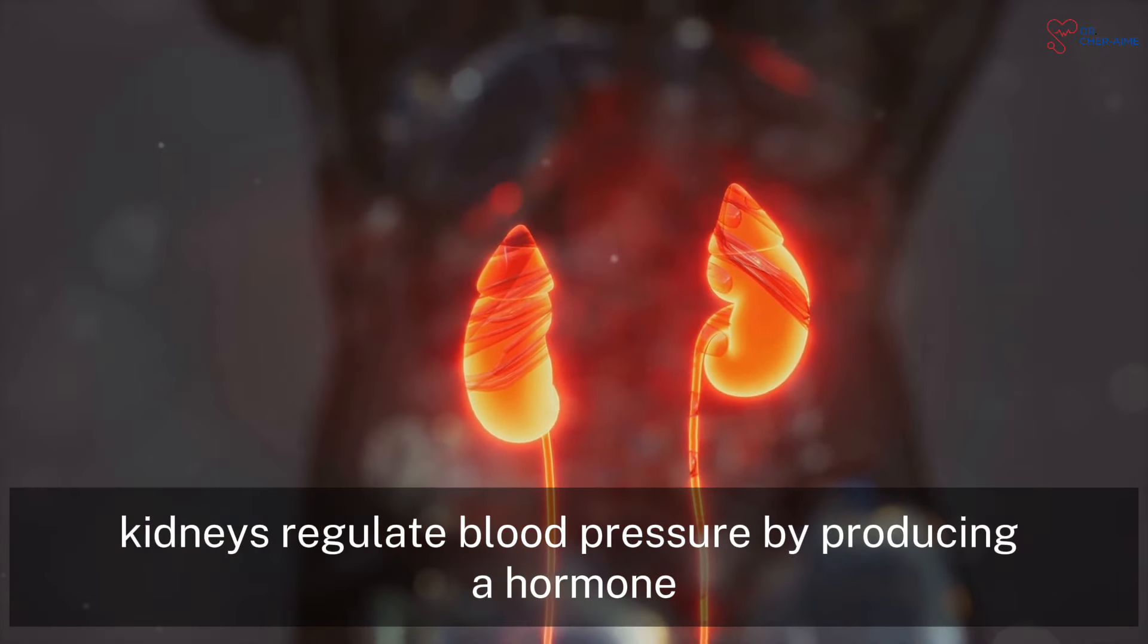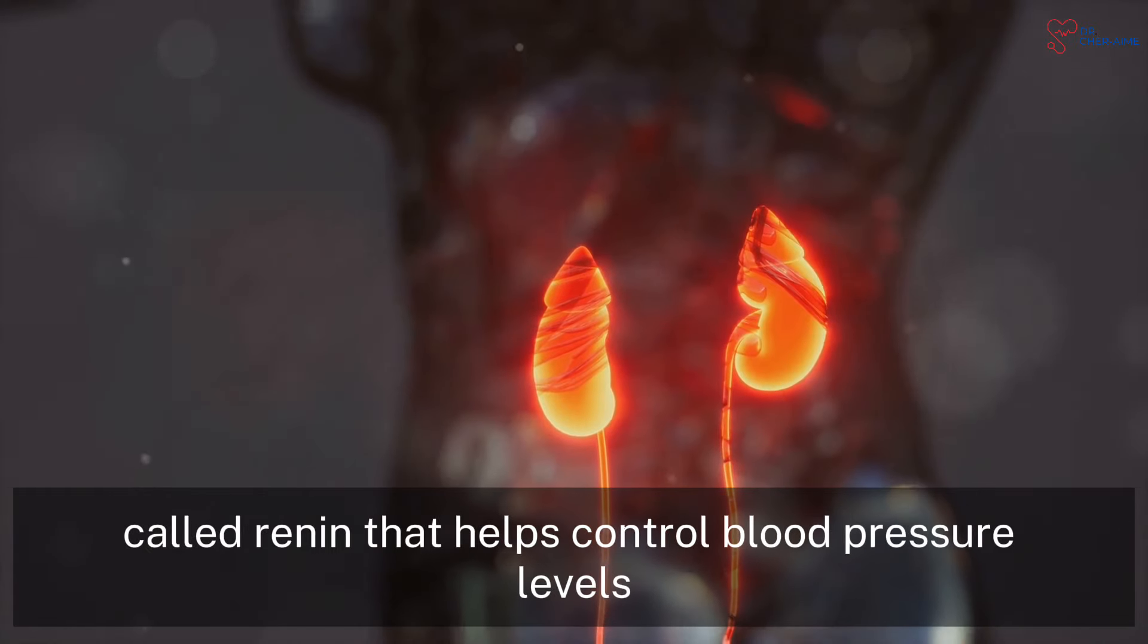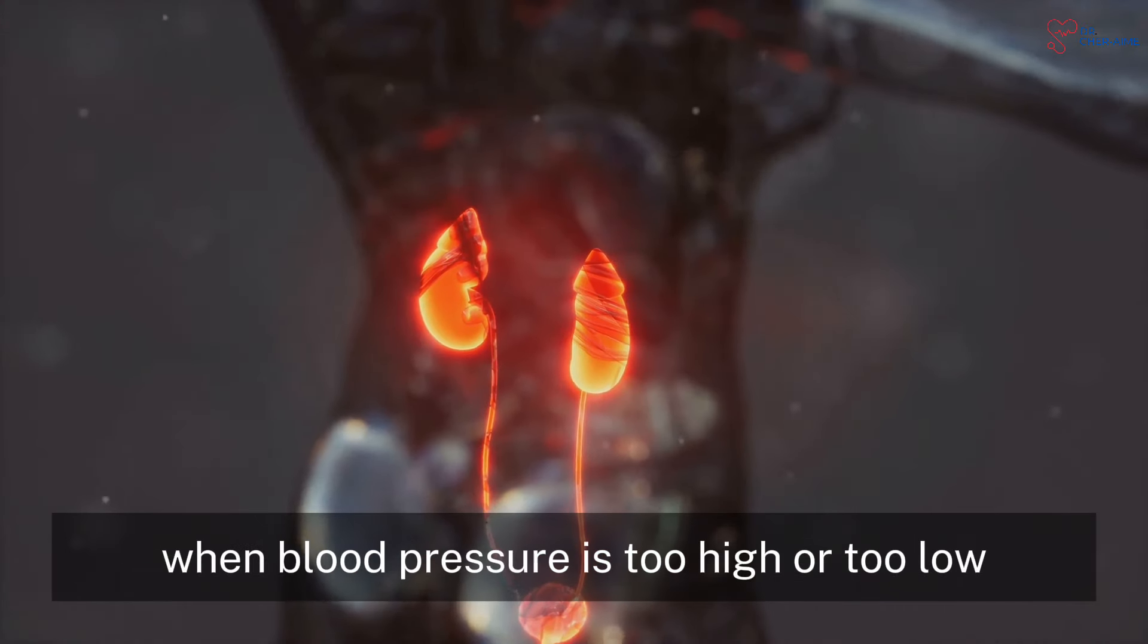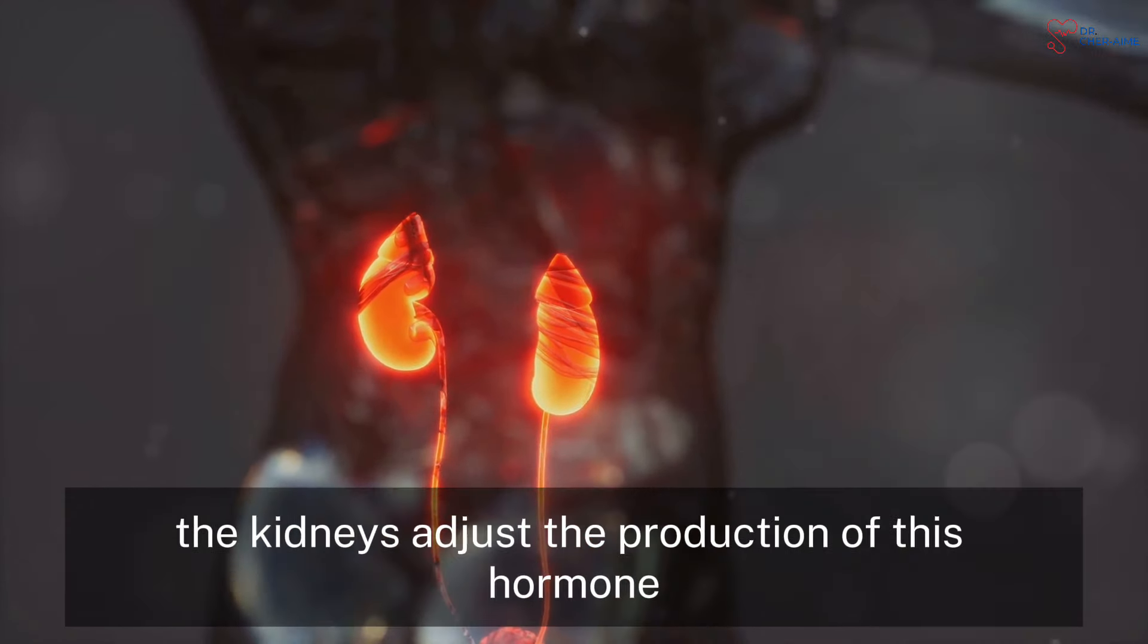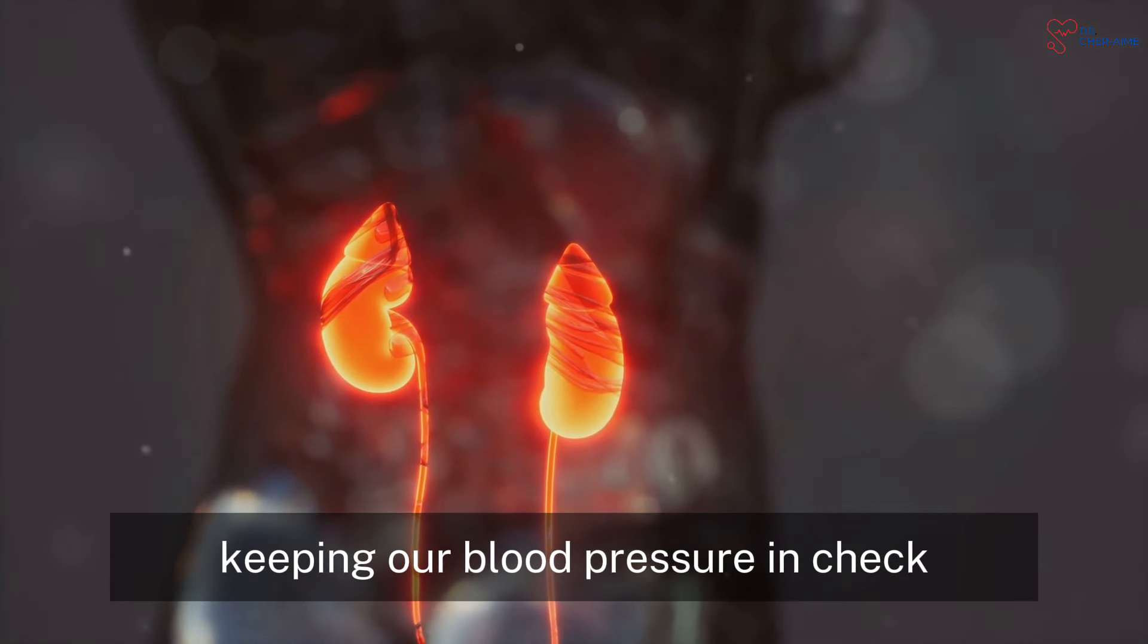In addition, kidneys regulate blood pressure by producing a hormone called renin that helps control blood pressure levels. When blood pressure is too high or too low, the kidneys adjust the production of this hormone, keeping our blood pressure in check.